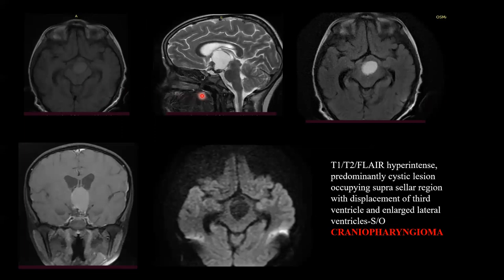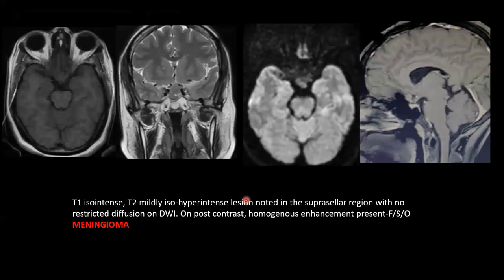T1, T2, and FLAIR hyperintense lesion, which is predominantly cystic, occupying the suprasellar region and causing compression of the third ventricle. On post-contrast, heterogeneous rim enhancement is seen. No restricted diffusion is seen on DWI. This is a case of craniopharyngioma.